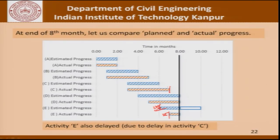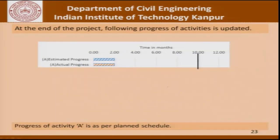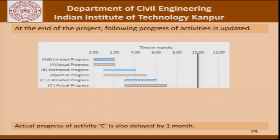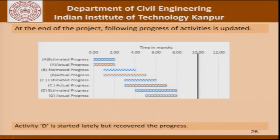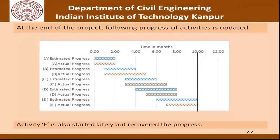Taking this illustrative example to its logical conclusion at the end of month 10, we find that even activity E, which was showing a lag at month 8, has also been completed in time. Instead of taking 4 months, this activity was completed in 3 months by using additional resources.